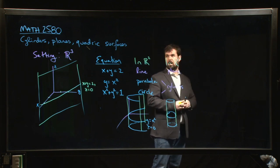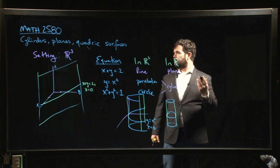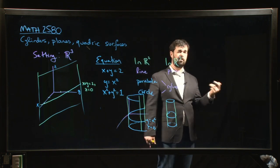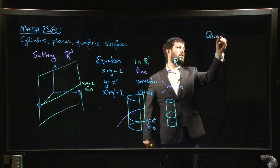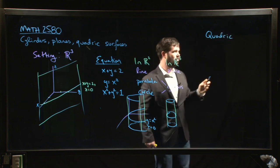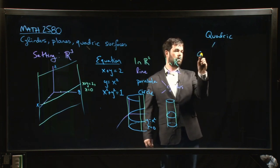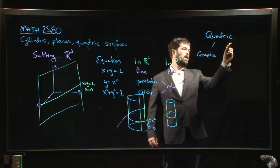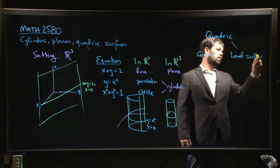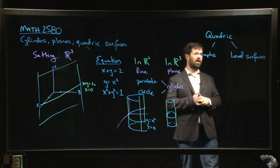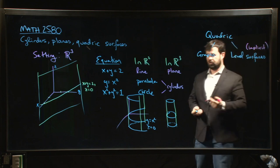The next most complicated examples — and the most complicated ones I'd expect you to draw — are the quadric surfaces, sometimes called quadratic surfaces because they're given by quadratic equations. They come in two flavors: some are graphs, and some are so-called level surfaces given by implicit equations.